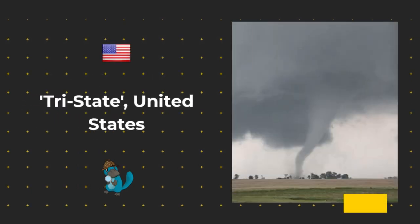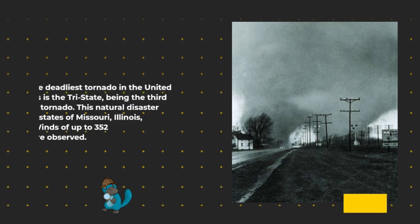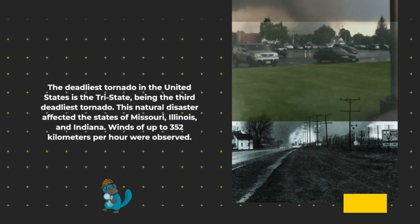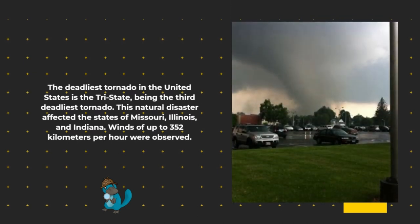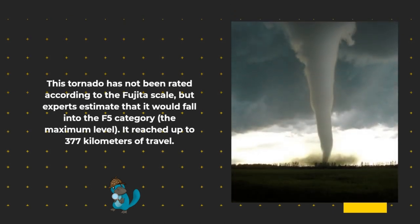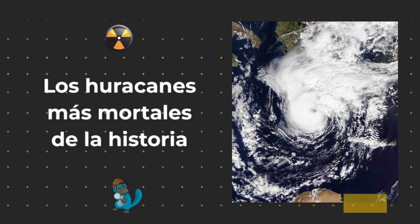The deadliest tornado in the United States is the Tristate tornado, being the third deadliest tornado overall. This natural disaster affected the states of Missouri, Illinois, and Indiana. Winds of up to 352 kilometers per hour were observed. This tornado has not been rated according to the Fujita Scale, but experts estimate that it would fall into the F5 category, the maximum level. It reached up to 377 kilometers of travel.